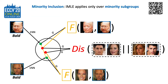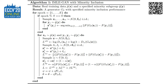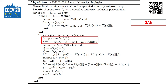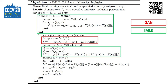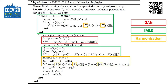Once we validate the improvement on mode coverage, we further focus on minority inclusion. This is formulated by applying IMLE reconstruction training only on minority subsets, while adversarial training still applies on the entire dataset. We briefly demonstrate our algorithm chart — more details are in the paper. The chart highlights the different components of our method, including regular GAN training, IMLE reconstruction training, the two harmonization strategies, and the specification on minority inclusion.